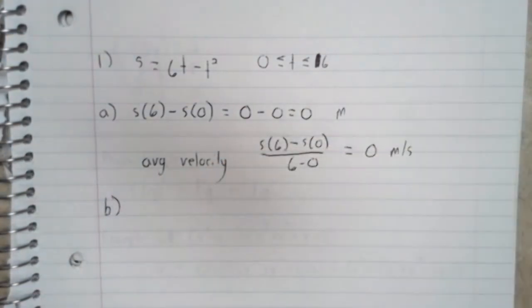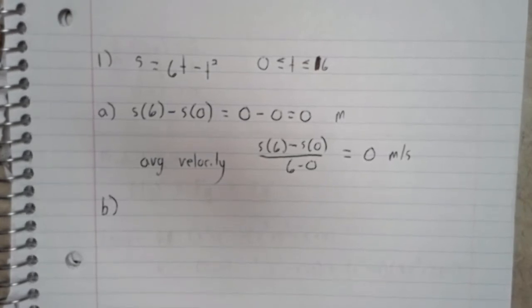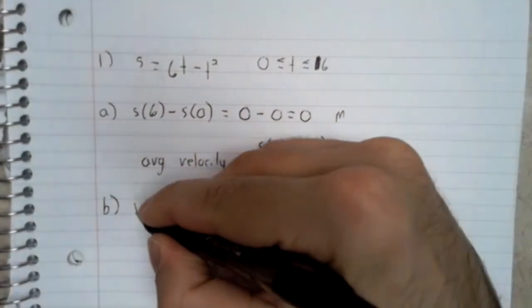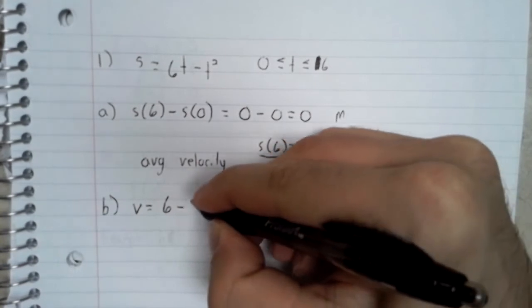This problem never asks for the velocity function v of t, but to do part b, we need to find that. Because b is asking about speed and acceleration, and speed is the absolute value of the velocity, and acceleration is the derivative of the velocity.